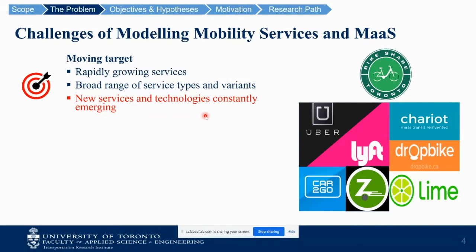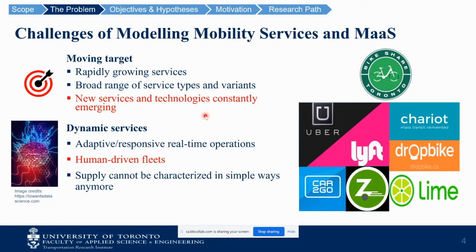I'll briefly talk about the challenges of modeling mobility services and Mobility as a Service. The problem is that it's inherently a moving target — these services grow really fast, there's a broad range of them, and even within a service there are many variants. Car sharing, for example, can be free-floating or round-trip. They change a lot with emerging technologies such as autonomous vehicles, electric vehicles, and shared mobility, so models can become outdated pretty soon. The services are adaptive, responsive, and real-time, involving human drivers. In short, supply cannot be characterized in simple ways anymore.